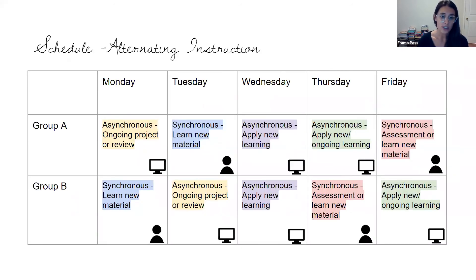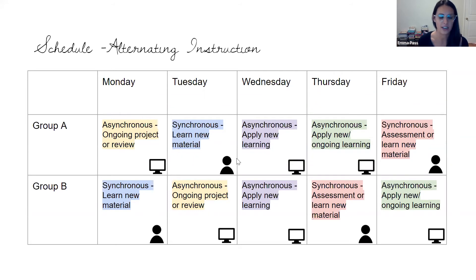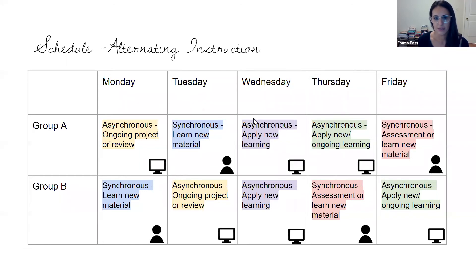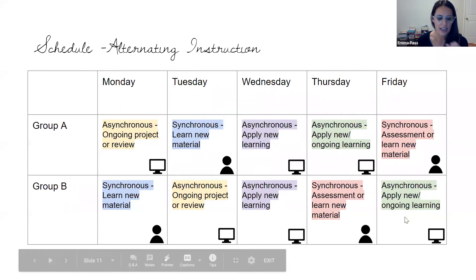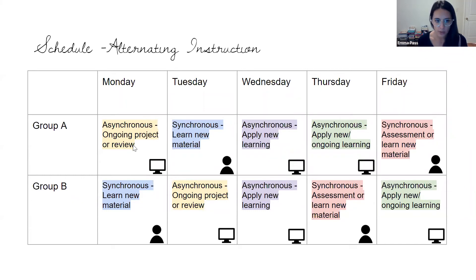In a scenario where you are doing an alternating instruction schedule with an A/B group, this is how I would recommend scheduling. At the bottom of the screen you can see a computer or a person icon — those indicate whether the group is asynchronous or synchronous. Each lesson is color-coded. Group A has five lessons planned, and group B gets those same five lessons in a different order. On Monday, group A is asynchronously working on a project — typically something ongoing like reviewing vocab or working on a book project, something that doesn't need direct instruction or new material.